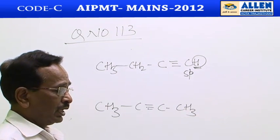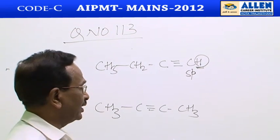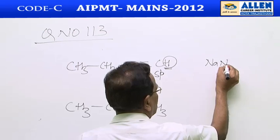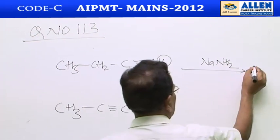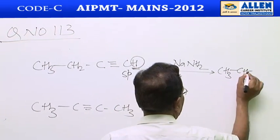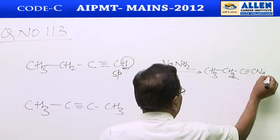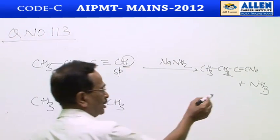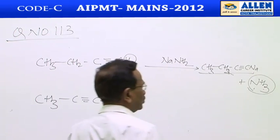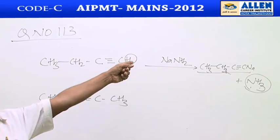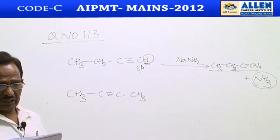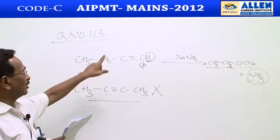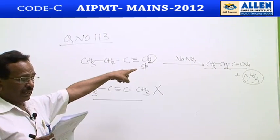The question is very simple. It will react with very strong base, that is with NaNH2 sodamide, and gives a salt - sodium alkynide and ammonia. It gives ammonia smell and this white precipitate of sodium alkynide. It distinguishes between 1-butyne and 2-butyne. 2-butyne does not have any acidic hydrogen. Only sodamide NaNH2 option is correct.